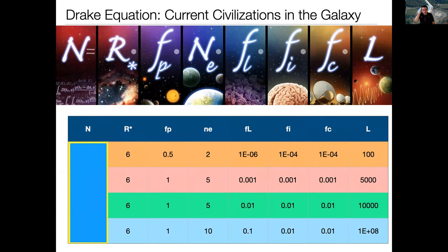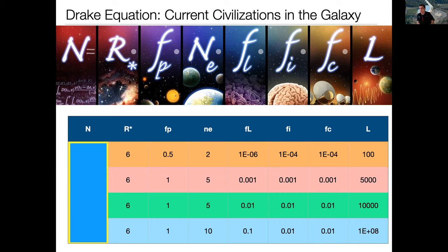Let's go back to our Drake table. Here are all the numbers in the first six columns from the first half of lecture, and in the right-hand column are the values for L we just talked about. I've taken 100 and 5,000 — the ultra-pessimistic and kind of pessimistic values — and I've taken 10,000 years for the optimistic row, meaning the Indus Valley civilization just had bad luck and could have survived ten thousand years easily if there hadn't been a drought. And then at the bottom, a hundred million years — the dinosaur limit, the extinction limit.